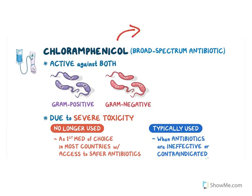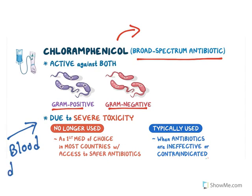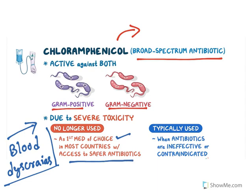Chloramphenicol is isolated from Streptomyces venezuelae. It is a broad-spectrum antibiotic, meaning it is active against gram-positive as well as gram-negative bacteria. However, it has got some severe toxicity known as blood dyscrasias — disorders that affect the red blood cells. Because of this severe toxicity, it is not the first choice of drug when safer antibiotics are available, but it is typically used when other antibiotics are ineffective or contraindicated.